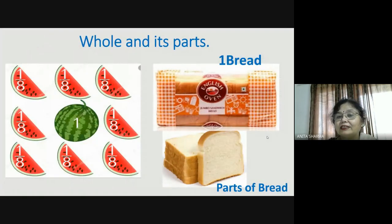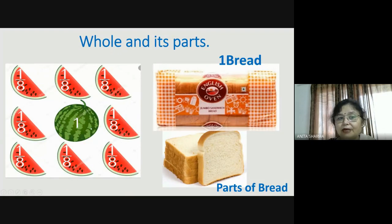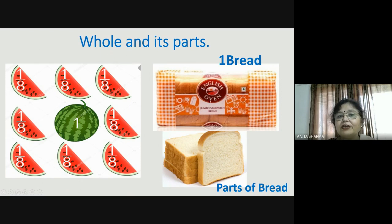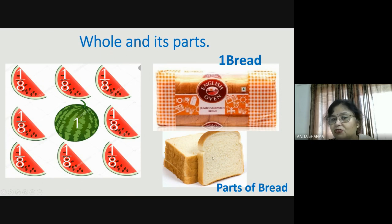Now, whole and its parts — you will understand more with these examples. You can see there one whole watermelon, and a whole is written with one. This symbol of one is used to write one whole watermelon. And these are the pieces of watermelon — these are parts of watermelon. Here you can see whole bread. This is one bread, and here are the parts of the bread. Pieces of bread are parts of one whole bread.